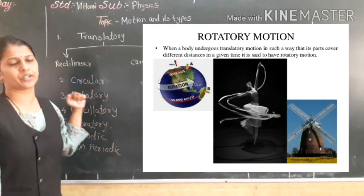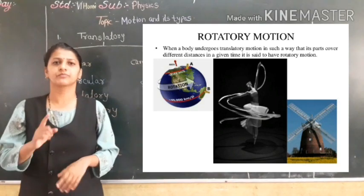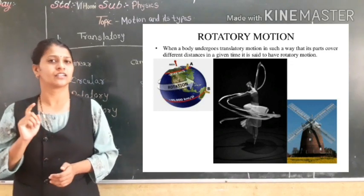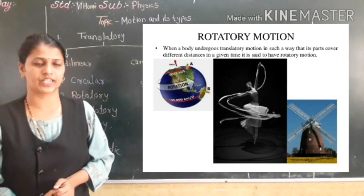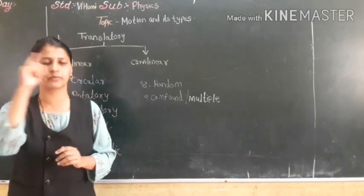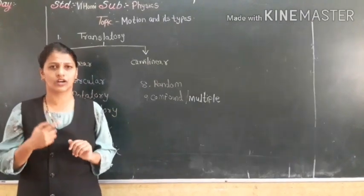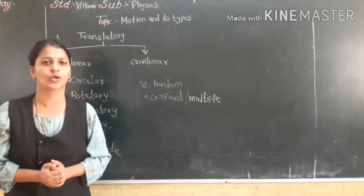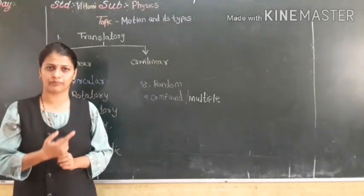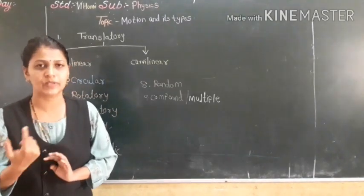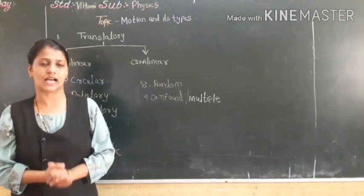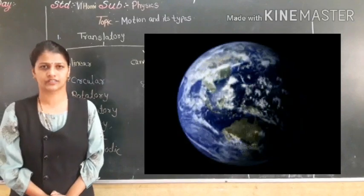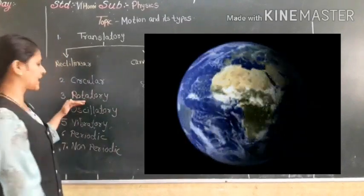Next is rotatory motion. Rotatory motion means when an object moves along a fixed axis. For example, the blades of a fan move along a fixed axis — that is rotatory motion. Spinning of a top and the rotation of the Earth are also examples of rotatory motion.